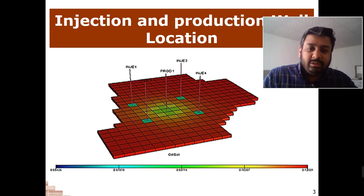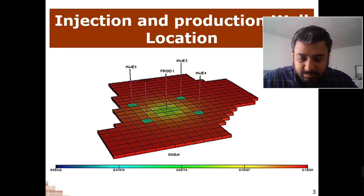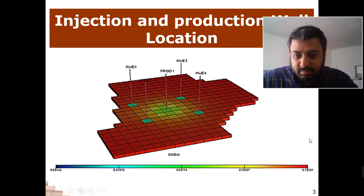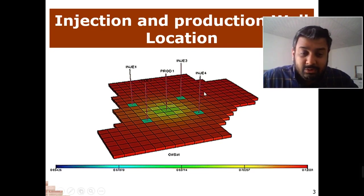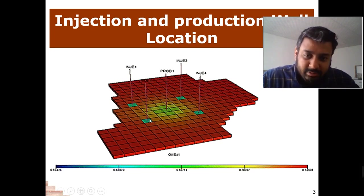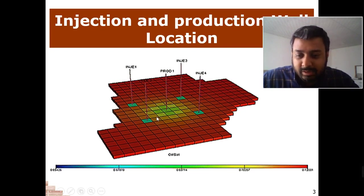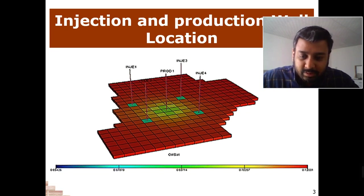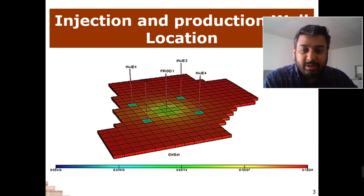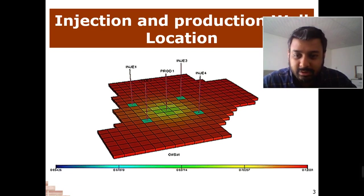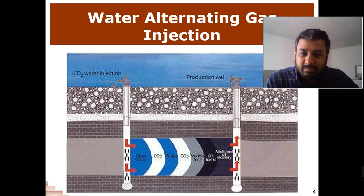What you can do in this case is develop your algorithm in Python, let it automate and check each grid block automatically, and it will give you the final result based on machine learning tools. In the end, you can have a very good location for the injection well and a good injection-to-production ratio for successful recovery.